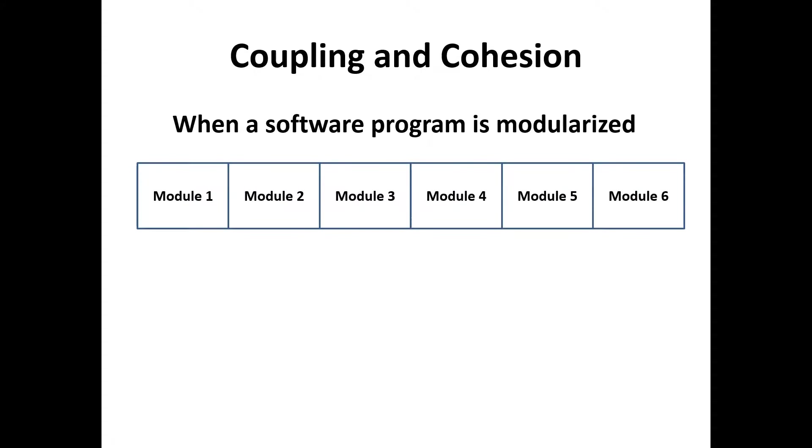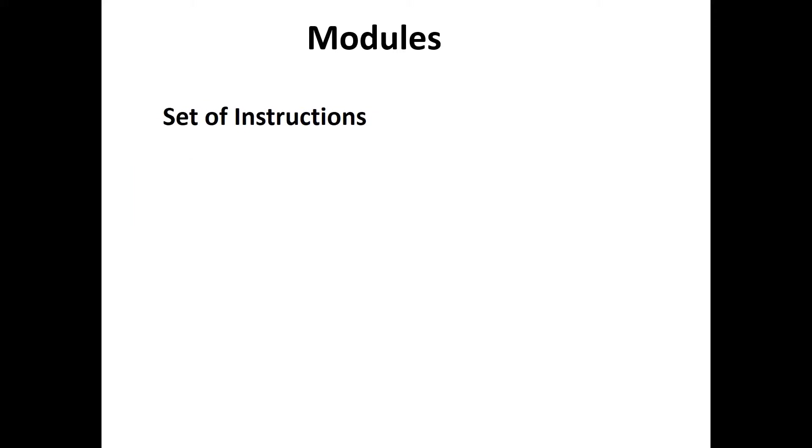Coupling and cohesion. When a software program is modularized, its tasks are divided into several modules based on similar characteristics. As we know, modules are a set of instructions put together in order to achieve tasks.